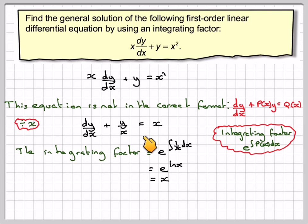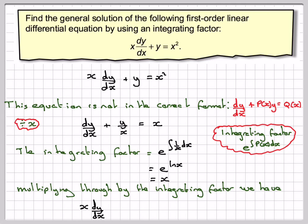Now go back to the original differential equation and multiply through by the integrating factor. Multiplying every term by x, we now have x dy/dx plus y, because x/x will cancel out, equals x squared.